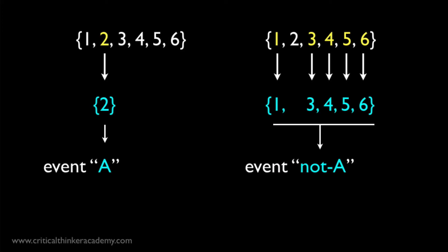The event of rolling a 2 is represented by this single element of the set. The event of not rolling a 2 is also represented by a subset of the sample space. In this case, the remaining 5 elements. In set theory language, we'd call the set on the right the complement of the set on the left.